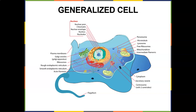The rough endoplasmic reticulum is surrounded by ribosomes and plays a key role in protein synthesis. The smooth endoplasmic reticulum doesn't have ribosomes on the outside and plays a key role in lipid synthesis — lipid meaning fat. The smooth ER also does detoxification, helping detox alcohol, drugs, etc. So if you had a late night partying, your smooth endoplasmic reticulum is going to work overtime.